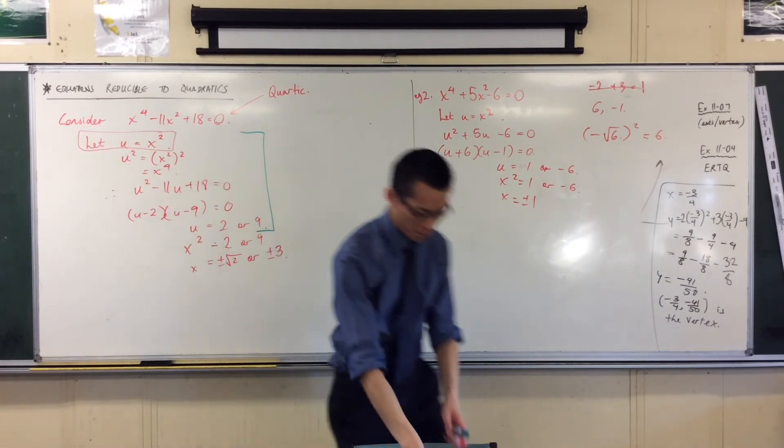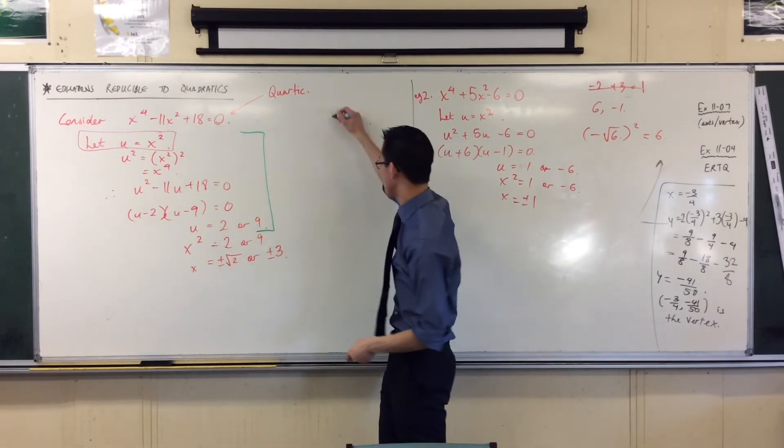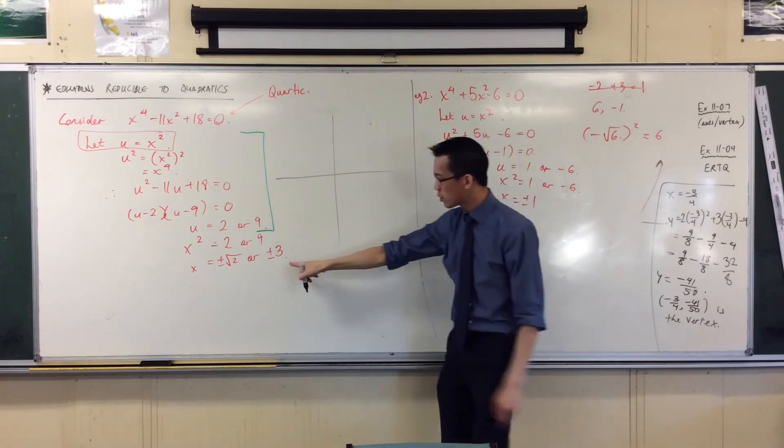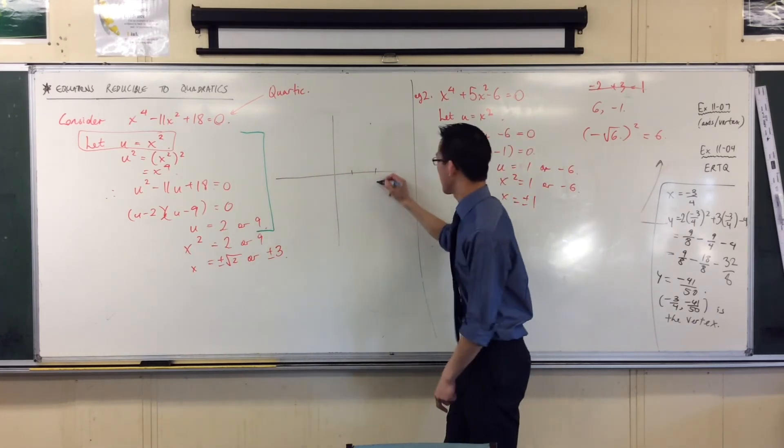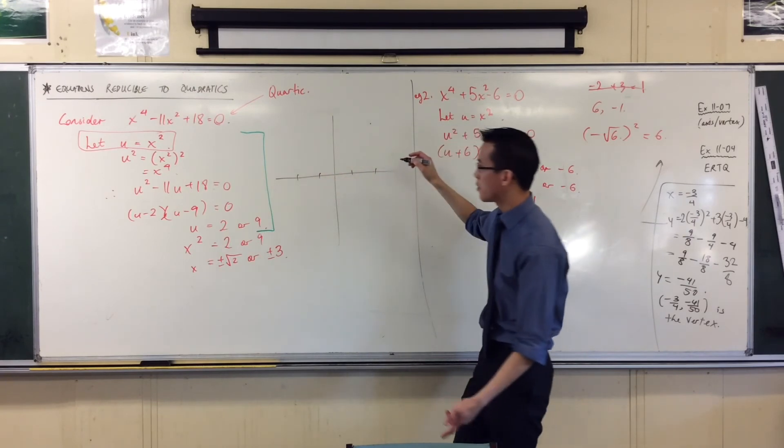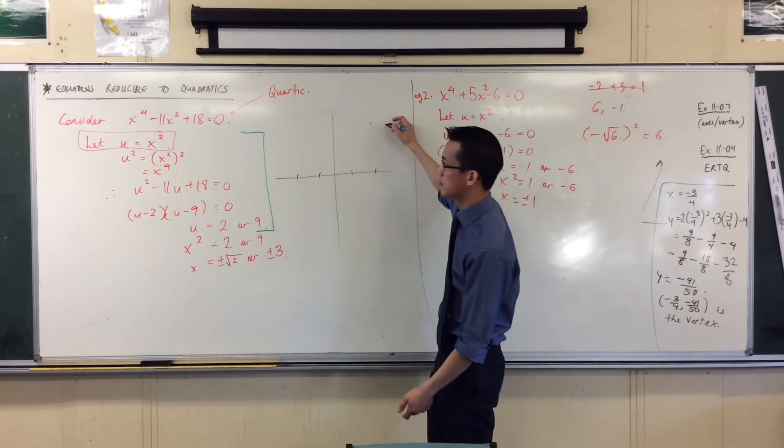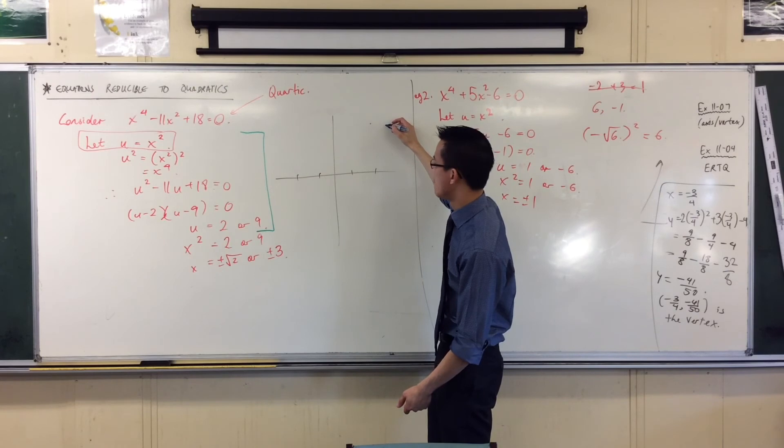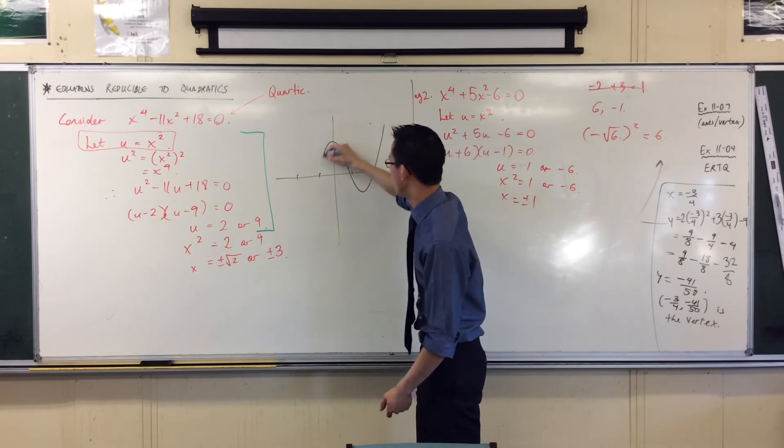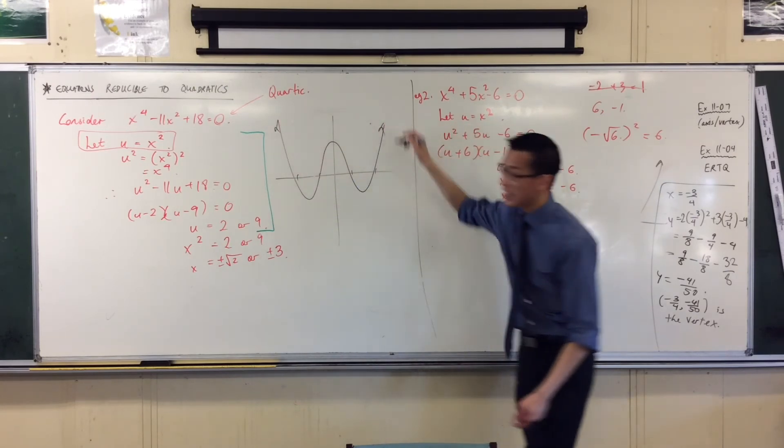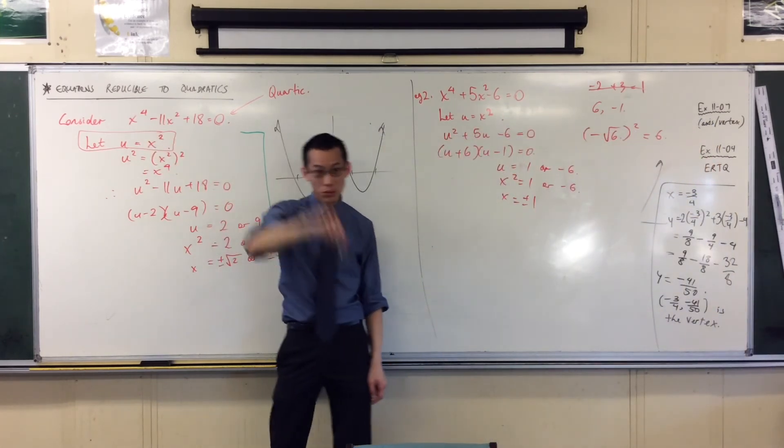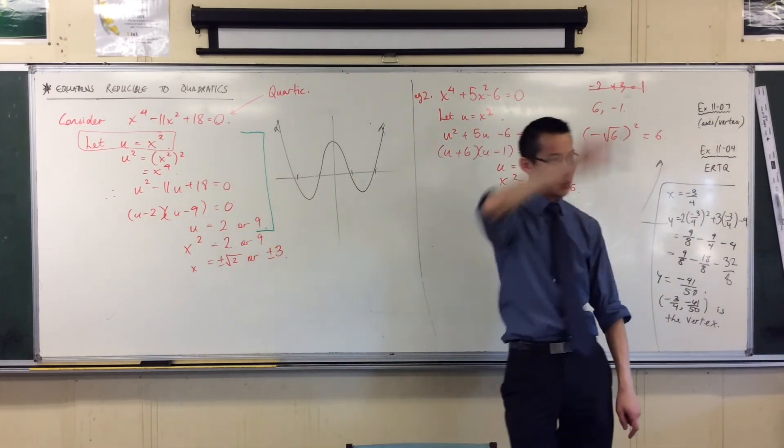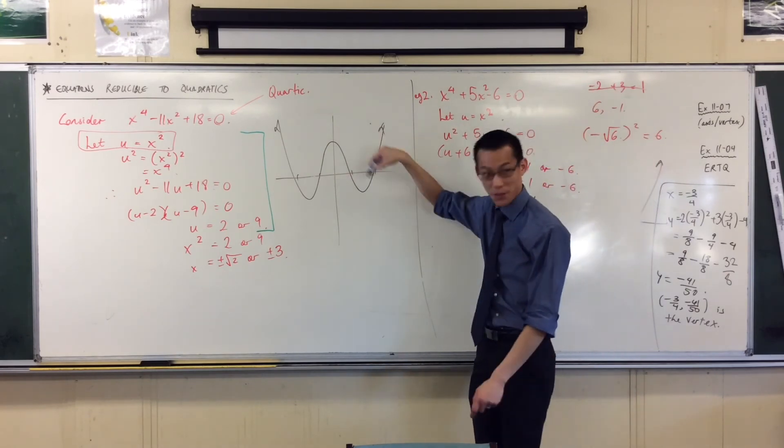Now, just out of the sake of curiosity, just so you can see what this means, what this would look like is, the square root of 2 is about 1.4. So you're going to get a graph that looks something like this. Something like that for this, because you've got a higher power up here, it just wiggles more. Just like a parabola wiggles once and it just goes off. This guy wiggles a few more times.